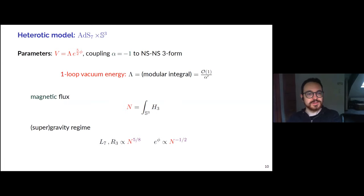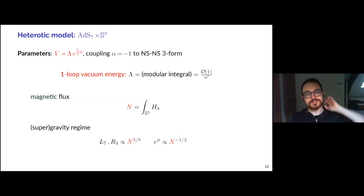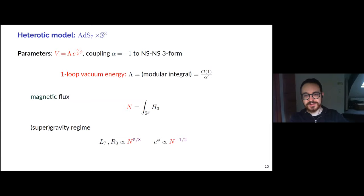We have some ADS vacua that are very easy to find because of maximal symmetry — everything boils down to algebra. But as anticipated, these vacua will probably be unstable, and indeed they are, both perturbatively and non-perturbatively. So it helps to gain some string intuition of their origin. It turns out these ADS vacua — ADS times S, ADS times M in general — can be recovered as near-horizon geometries of more general geometries sourced by stacks of flat p-branes charged with respect to the three-form.